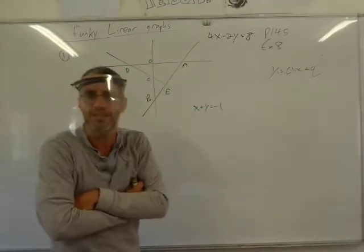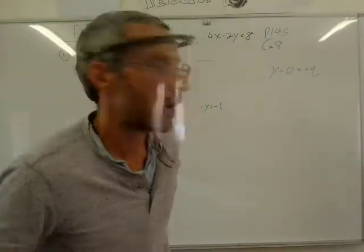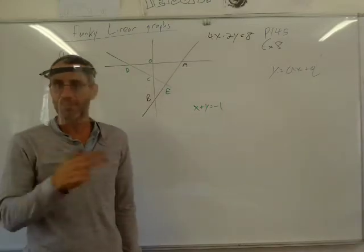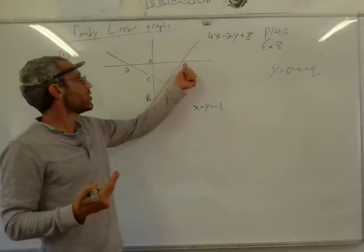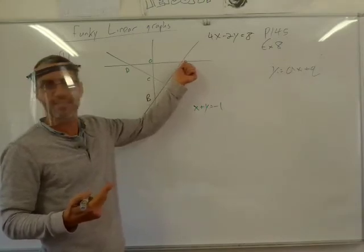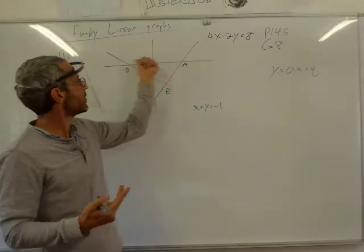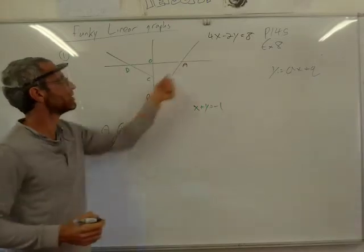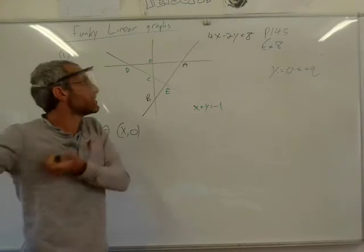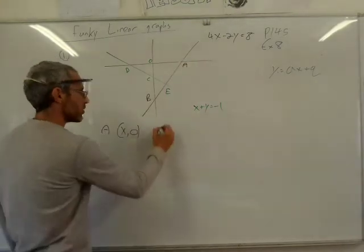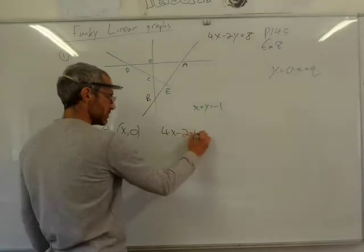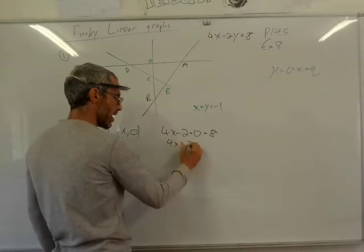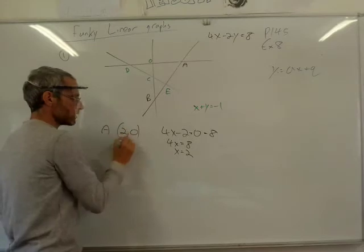When looking for coordinates of A, we need two numbers: the x and the y. Let's go with the easy one — the y. At the x-intercept, every point along the x-axis has y equal to zero. So to find x, I substitute y = 0 into 4x minus 2 times 0 equals 8. So 4x = 8, giving x = 2. That coordinate is (2, 0).